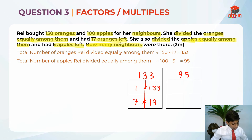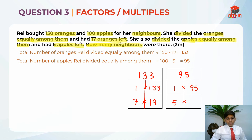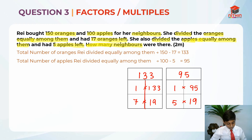Now we find the factors of 95. 1 is a factor of all numbers, and 1 times 95 equals 95, so 95 is also a factor of 95. Checking other numbers: 2, 3, 4 can't divide 95, but 5 can. 5 times 19 gives us 95, so 19 is also a factor of 95. The factors of 95 are 1, 5, 19, and 95.